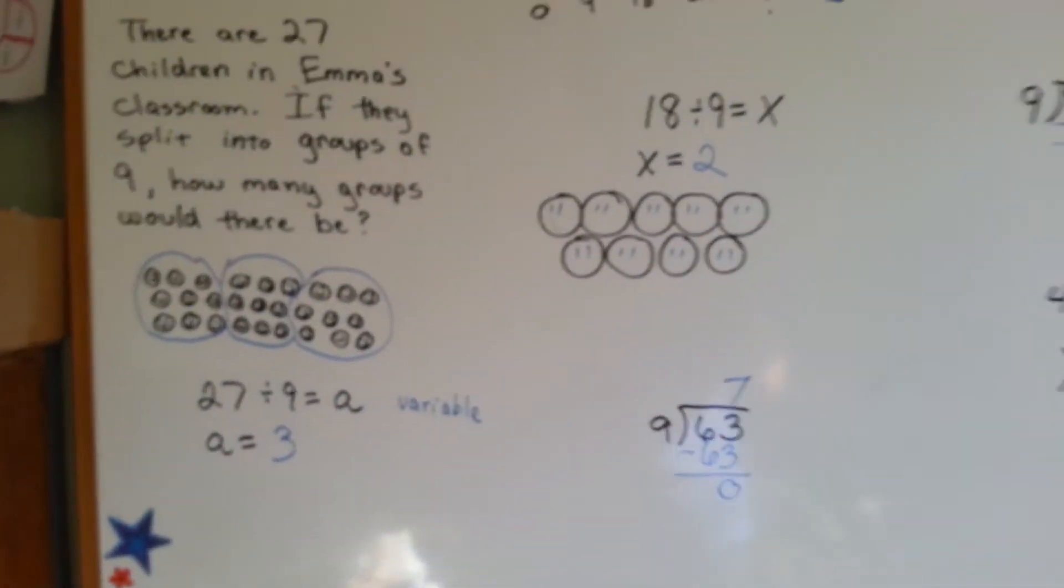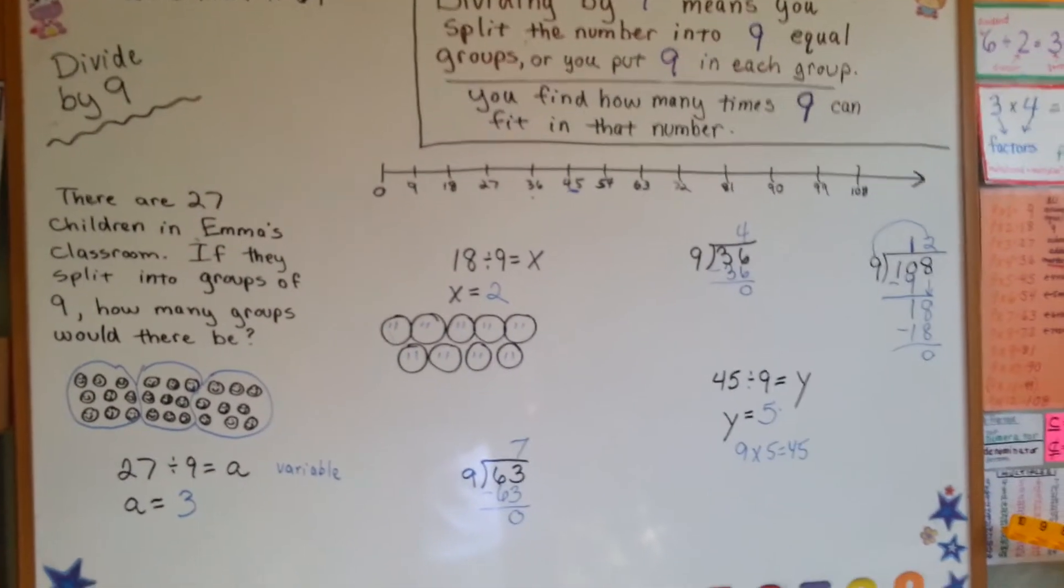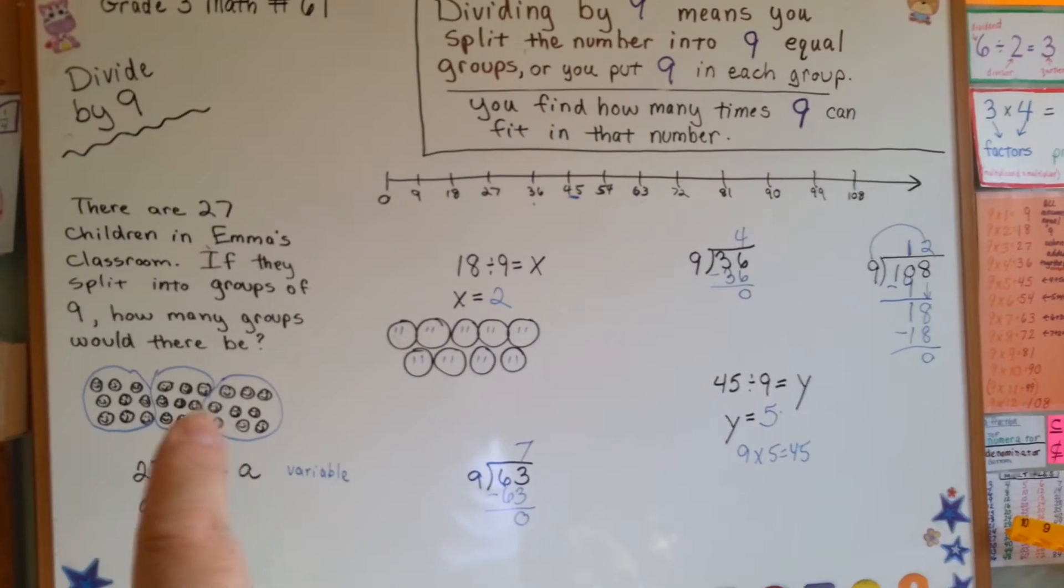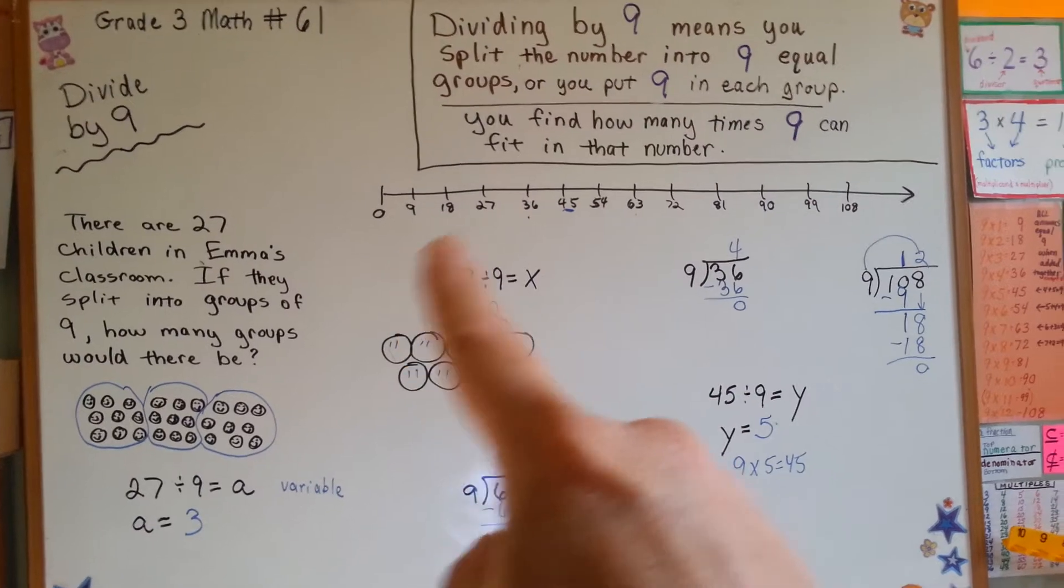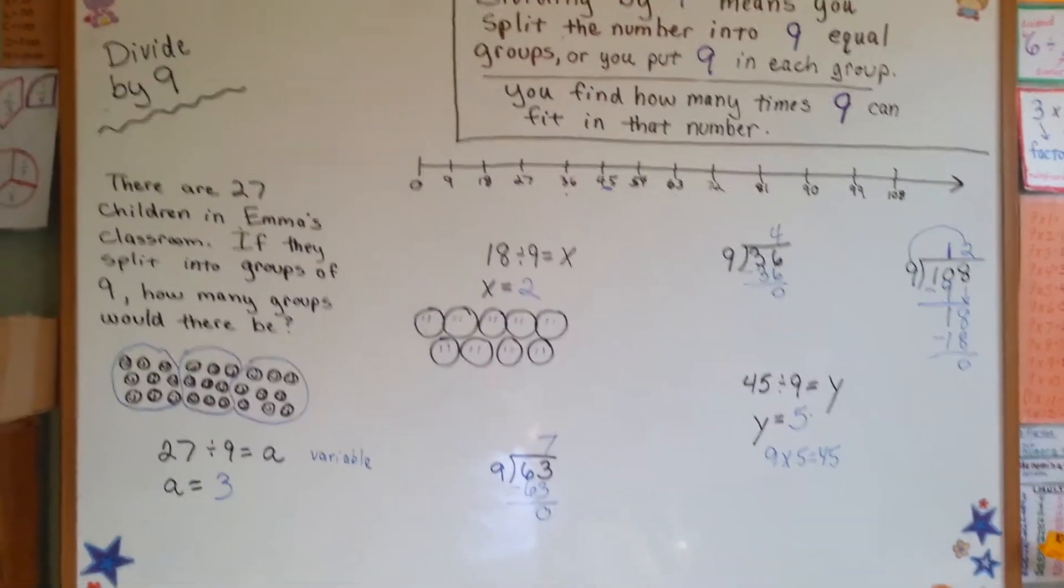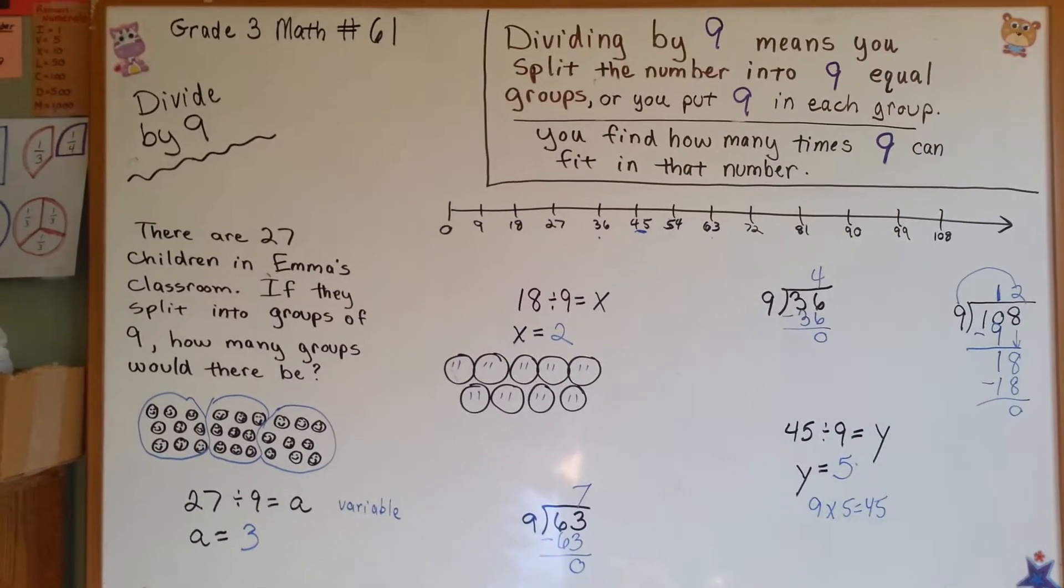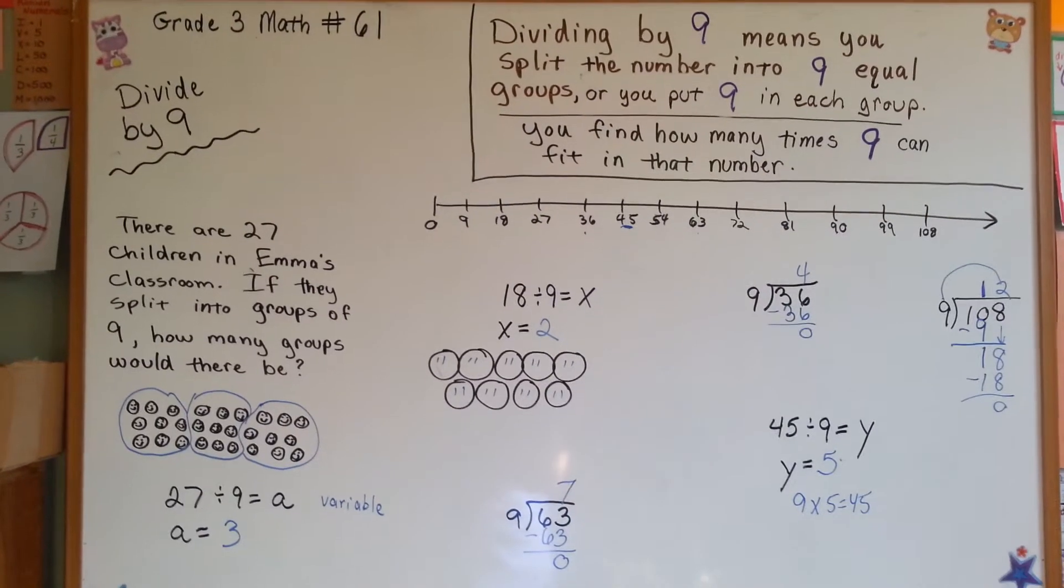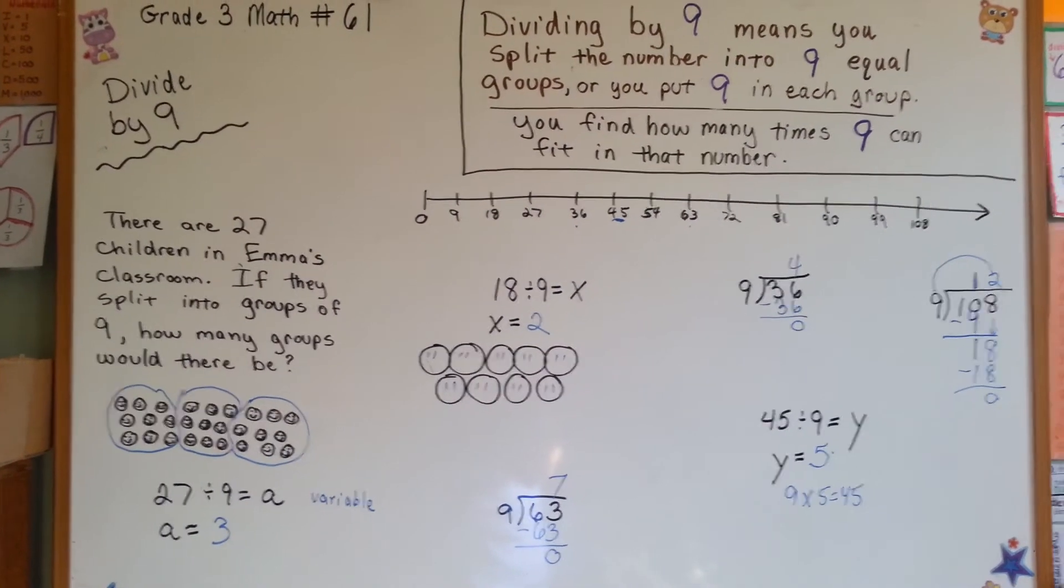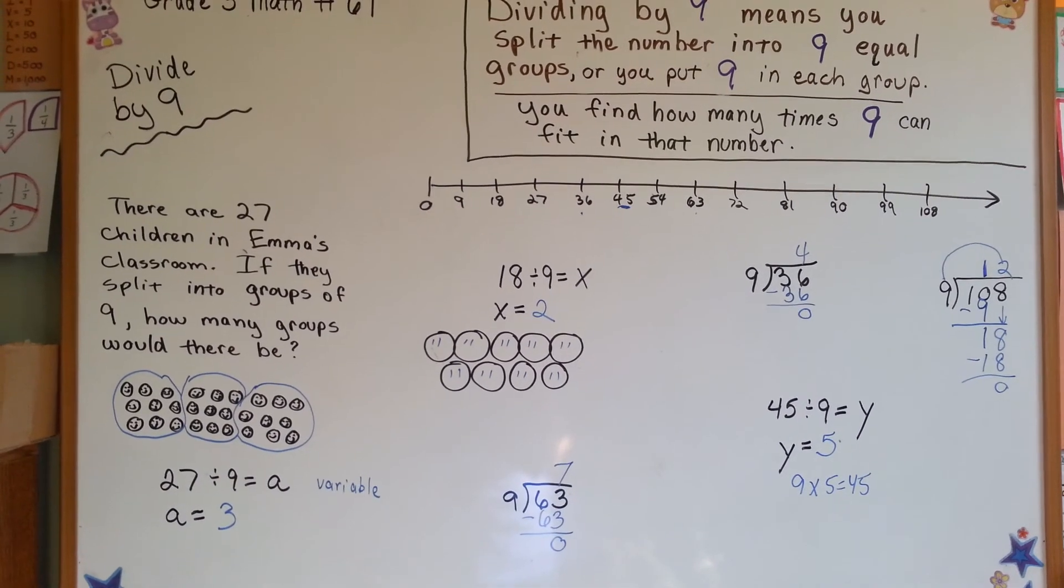So those are different ways you can figure out how to divide by 9. You can circle groups. You can fill in groups. You can use skip counting. You could also use the subtraction method which I've shown in previous videos. Keep doing your times table. Try to memorize them the best you can. The quicker you are in your times table, the quicker you'll be in math. Keep up the good work and I'll see you next video. Bye!